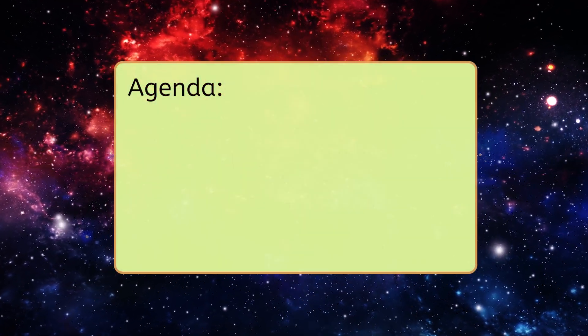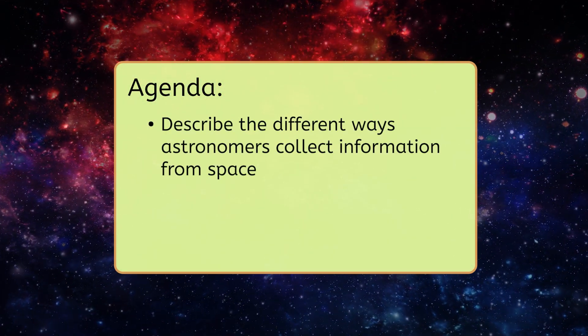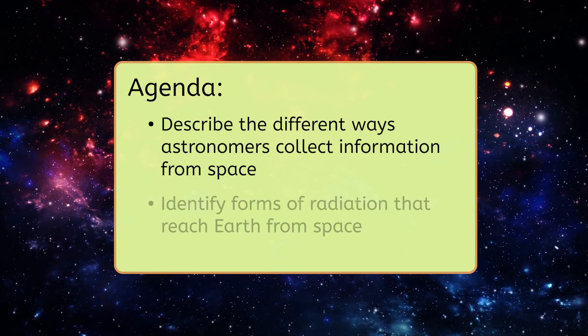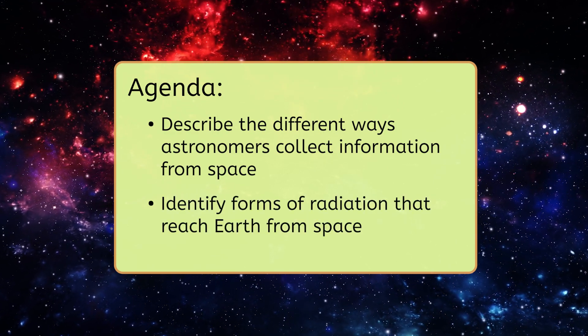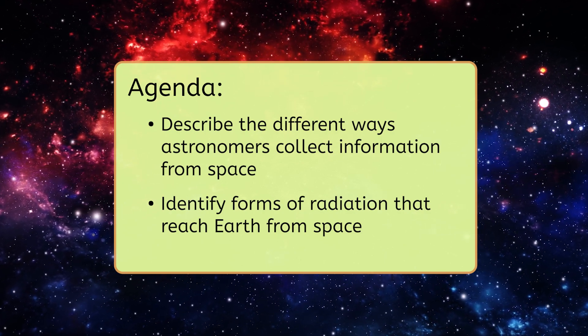That's why astronomers have invented some pretty incredible tools to help them see across the universe, making it possible to study distant planets and galaxies. By the end of this lesson, you'll be able to describe the different ways astronomers collect information from space and identify forms of radiation that reach Earth from space. Let's get into it!